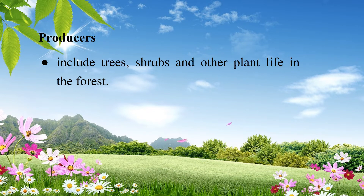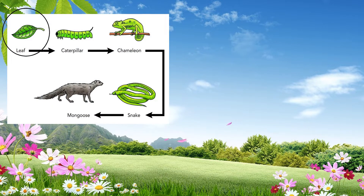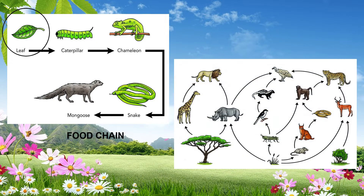The producers include trees, shrubs, and other plant life in the forest. They also provide food for the consumers, which include herbivores — plant-eating animals — and carnivores, the flesh-eating animals. Feeding relationships like food chain and food web occur among species in the forest ecosystem. A food chain starts with the producer, a series of consumers, and decomposers. A food web results from interconnected food chains.